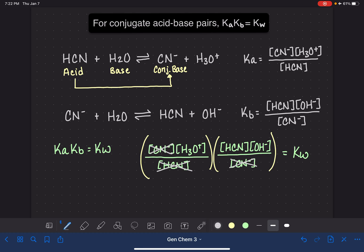We've got HCN on the bottom and the top, so that's also going to cancel. What we're going to be left with is H3O-plus times OH- is equal to Kw.